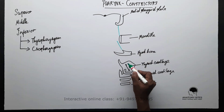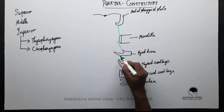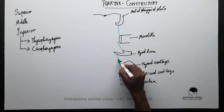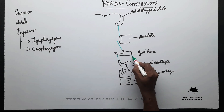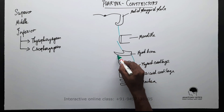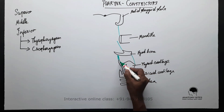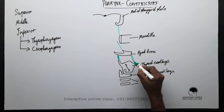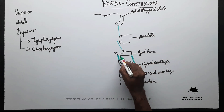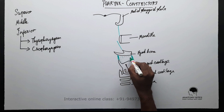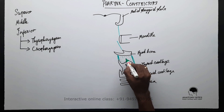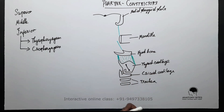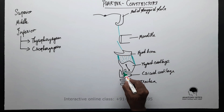Extending between the thyroid cartilage and the hyoid bone is a membrane and few ligaments: the lateral thyrohyoid ligament on either side, a median thyrohyoid ligament, and in between there is a thyrohyoid membrane. These ligaments are part of the larynx.